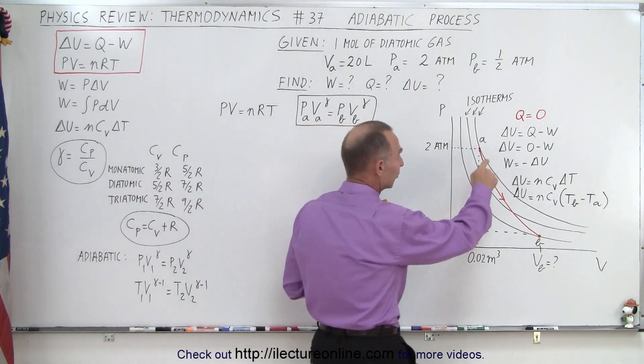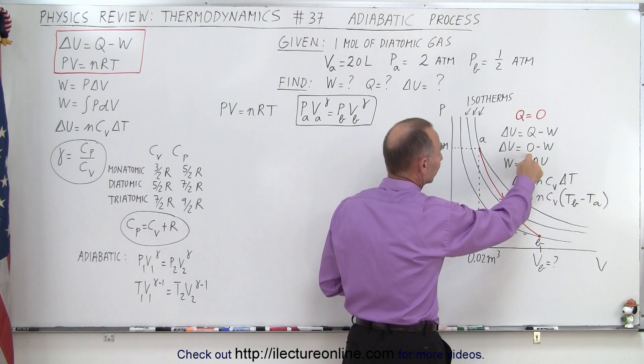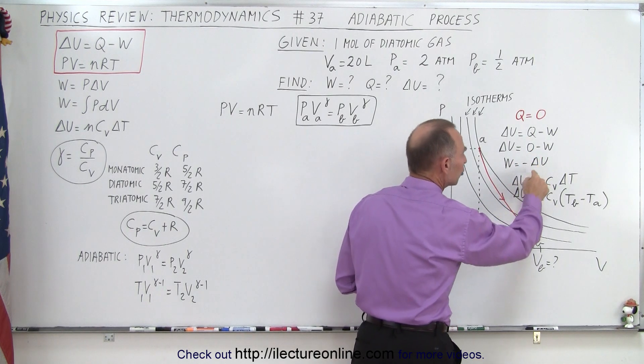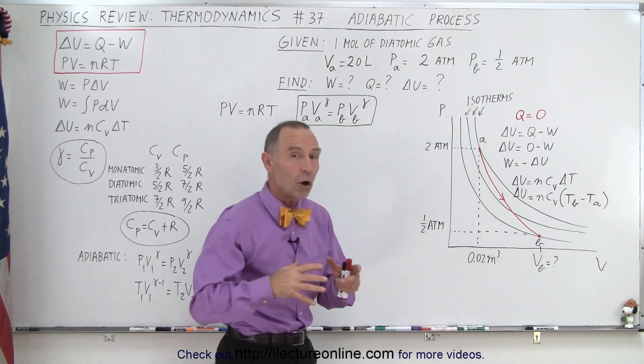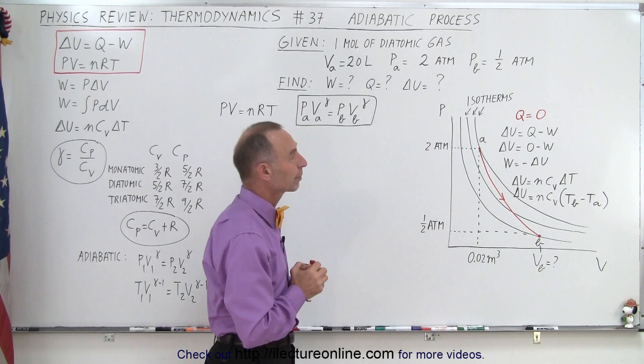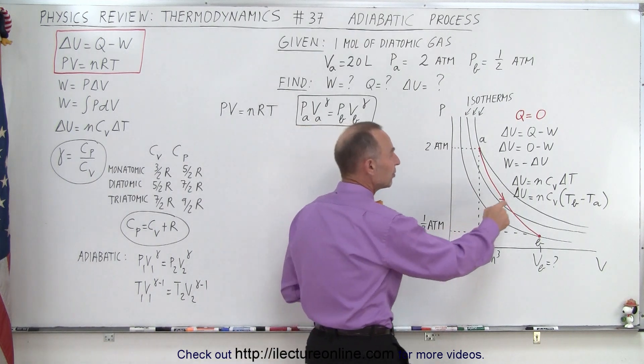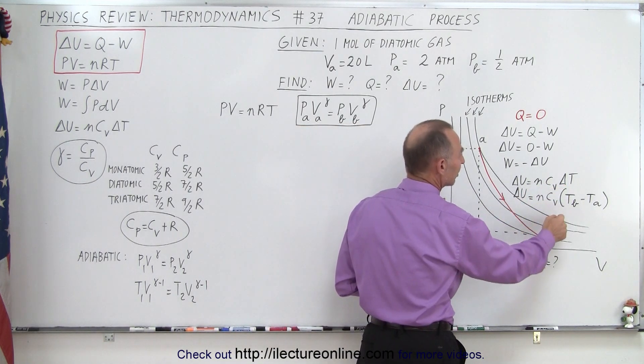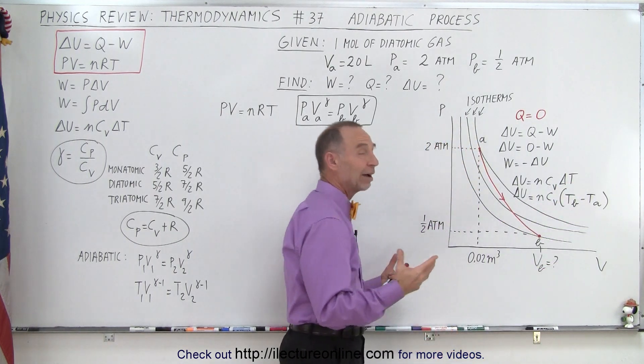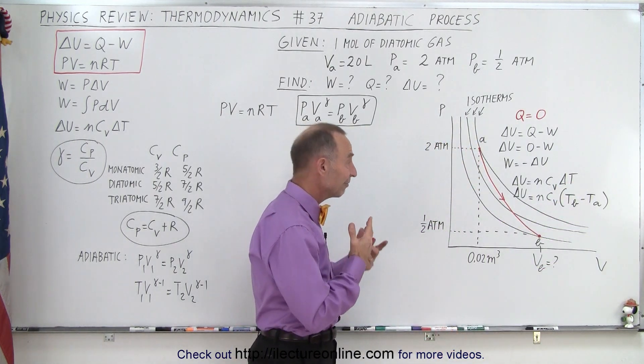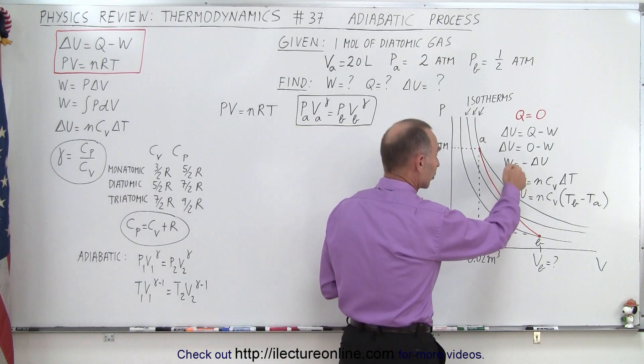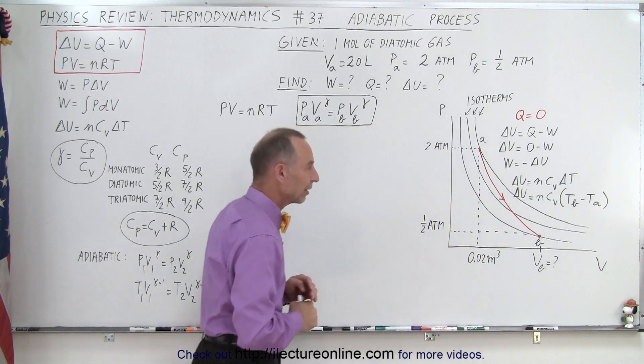If we take the first law of thermodynamics and replace Q by zero, we see that the work done is equal to the negative of the internal energy change. In other words, all of the energy that is used to do work came from the internal energy of the gas. Since delta U is equal to NC_V delta T and the change in temperature is the final temperature minus the initial temperature, all we have to do is know the final and the initial temperature of a gas in order to calculate the delta U and therefore the work done by the gas.